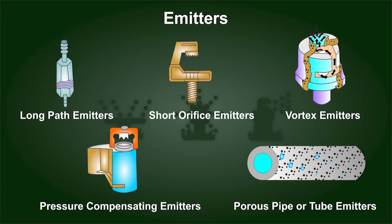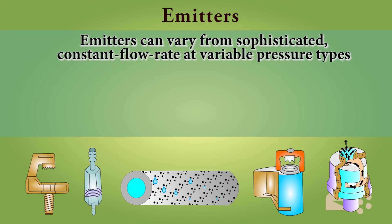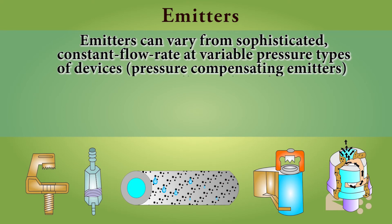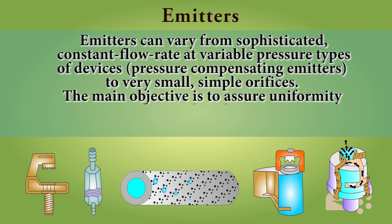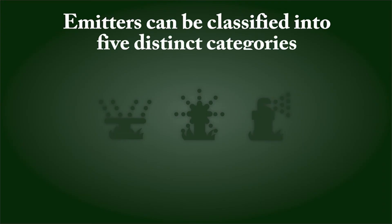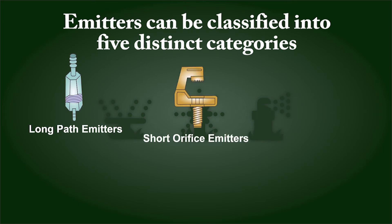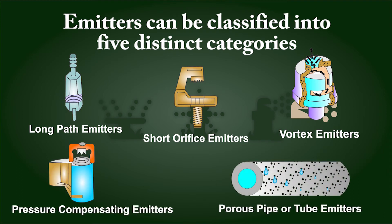Emitters can vary from sophisticated constant flow rate at variable pressure devices to very small simple orifices. The main objective is to assure uniformity of water distribution, and the emitter should not clog very easily. Emitters can be classified into five distinct categories: long path emitters, short orifice emitters, vortex emitters, pressure compensating emitters, and porous pipe or tube emitters.